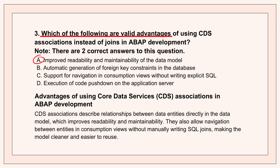The second big advantage is how associations support navigation in consumption views without needing explicit SQL joins. You can navigate between entities directly in your CDS views using the path defined by the association — you don't have to manually write the JOIN ON clause every time you want to pull related data. This makes your queries, especially in consumption layers like Fiori elements or analytics, much more modular and easier to write and understand. You leverage the relationships instead of rewriting them.